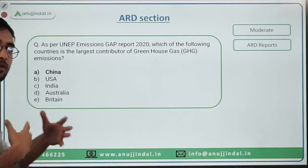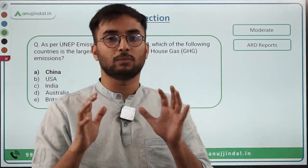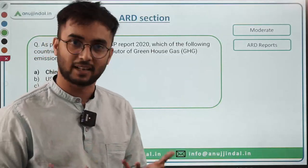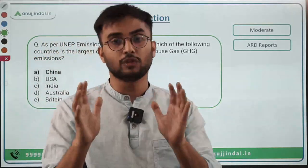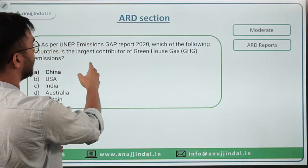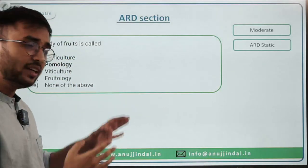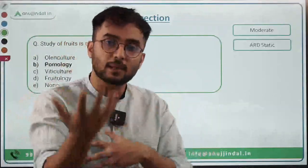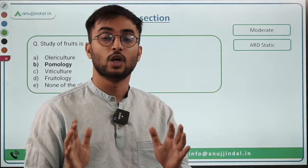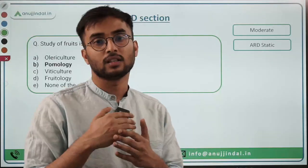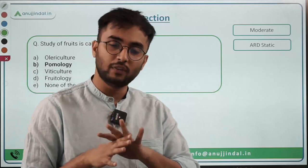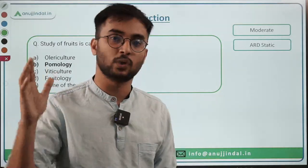'Which category has the most commodities in the e-NAM initiative?' — A scheme-related question. 'Study of fruits is called?' — Pomology, discussed earlier as a general awareness question. Do not focus on memorizing specific answers since questions won't repeat. Instead, understand the nature and type of questions asked for each topic, such as horticulture questions being asked from which angle. Once you understand this, objectives become easy and you will comfortably clear the Phase 1 cutoff.